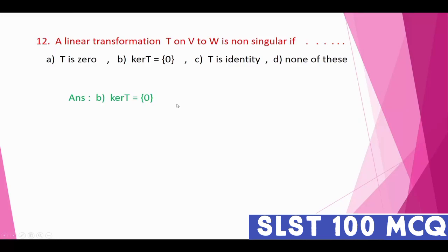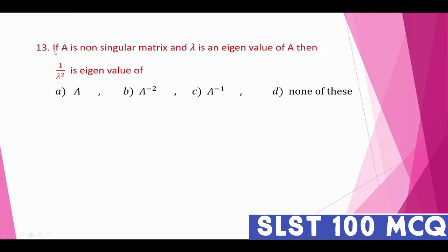Question thirteen: if A is a non-singular matrix and λ is an eigenvalue of A, then 1/λ² is an eigenvalue of which matrix? The correct answer is A to the power minus two — because 1/λ² corresponds to A⁻².